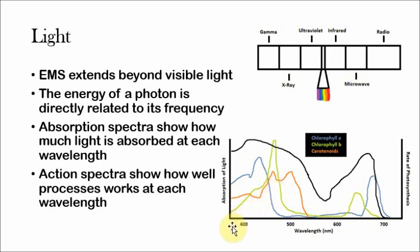The interesting thing is that the action spectra of photosynthesis, and an action spectra shows how well, or an action spectrum shows how well a process works at each wavelength. The action spectrum for photosynthesis actually is very similar to the absorption spectra of the three pigments that are involved in photosynthesis. The reason for this is that as these pigments absorb light, that's the same light that they're converting into the energy that can be used in photosynthesis.